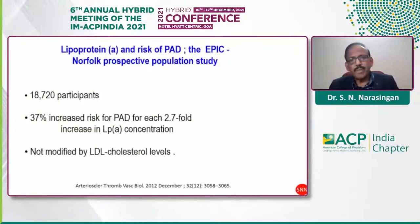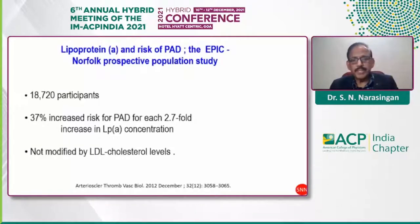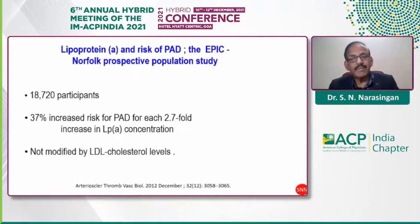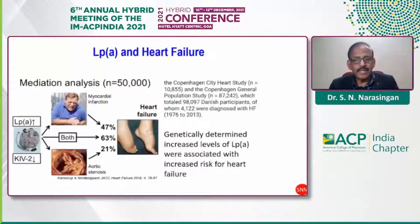The EPIC-Norfolk prospective population study, concentrating on about 19,000 participants, showed a 37% increase in peripheral artery disease for each 2.7-fold increase in lipoprotein(a) concentration, and this was not modified by LDL-C levels.